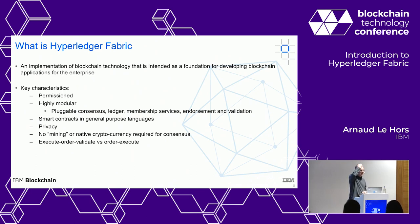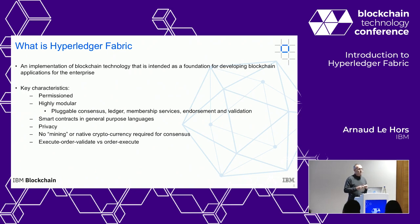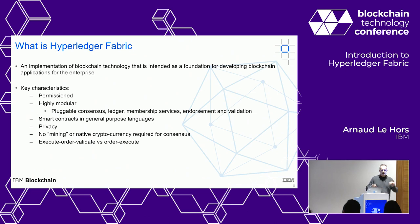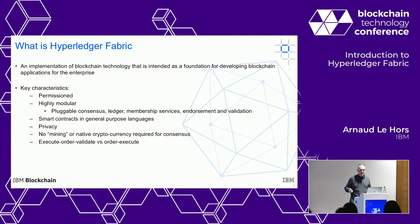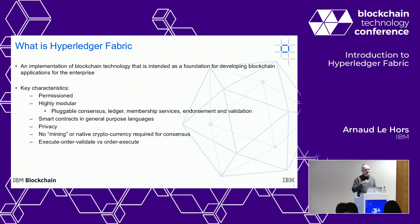The lack of privacy is also the cause of poor performance. Proof of work is actually a misnomer to call 'waste' — it fulfills a critical function in Bitcoin and Ethereum, preventing people from rewriting history. But once you know the participants and control access, you can get rid of proof of work altogether and get much better performance. Bitcoin does about 7 transactions per second, Ethereum about 15, while Hyperledger Fabric achieves on the order of 2,000 to 3,000 transactions per second.